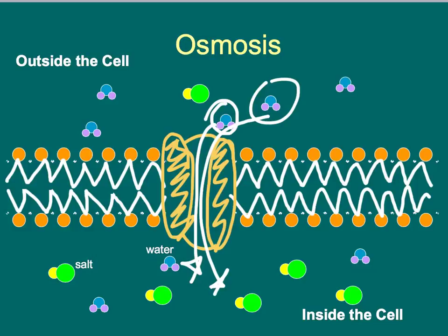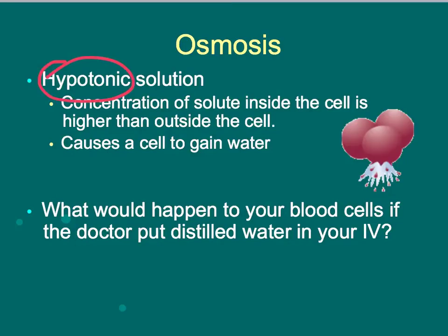In a hypotonic solution, water moves into the cell to equalize the concentration of salt to water on the inside with the outside. A hypotonic solution is just as bad for a cell as a hypertonic one because it causes the cell to gain water and then the cell will pop — in science we say the cell lyses. That's when a cell breaks open and spills its contents into the environment. It takes a while to show effects in a multicellular organism because many cells must go through this.